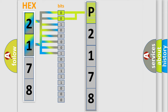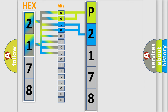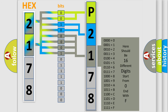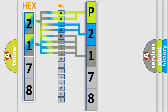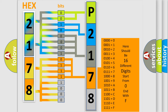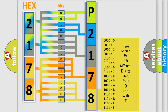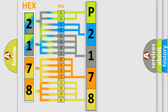By combining the first two bits, the basic character of the error code is expressed. The next two bits determine the second character. The last bits of the first byte define the third character of the code. The second byte is composed of a combination of eight bits: the first four bits determine the fourth character, and the last four bits define the fifth character. A single byte conceals 256 possible combinations. This is how the diagnostic tool translates the received information into a more comprehensible format.